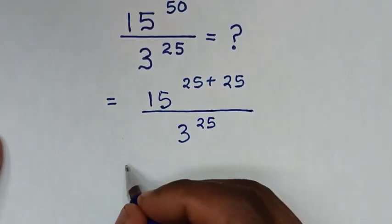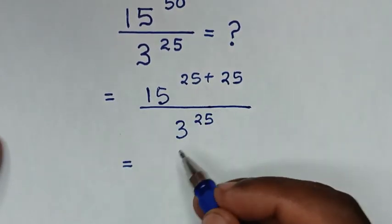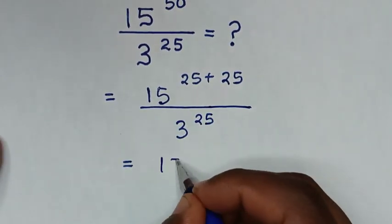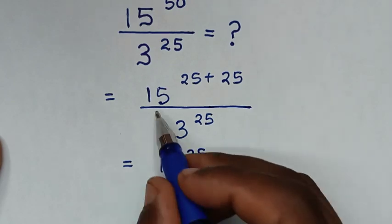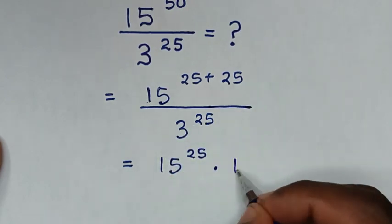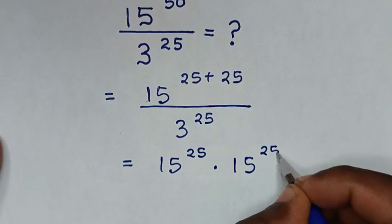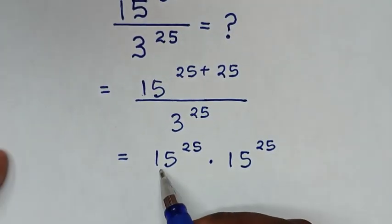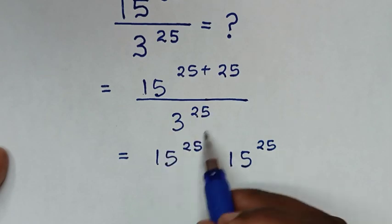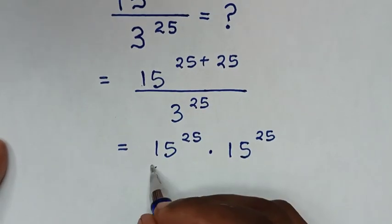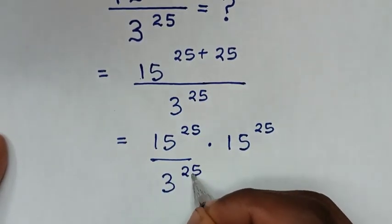Then it will be equal to 15 power of 25 times 15 power of 25. We then divide one of them by this 3 power of 25.